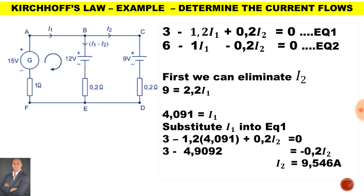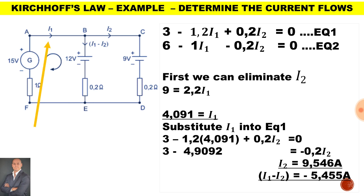The last current to calculate is I1 minus I2, which gives negative 5.455 amps. So from the circuit diagram, we have calculated I1, I2, and I1 minus I2.